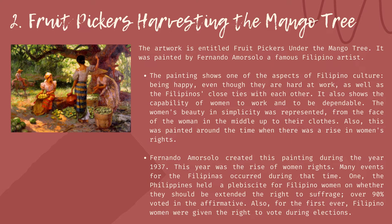Second: Fruit Pickers Harvesting the Mango Tree. The artwork is entitled Fruit Pickers Under the Mango Tree, painted by Fernando Amorsolo. The painting shows one of the aspects of Filipino culture — being happy even though they are hard at work — as well as the Filipinos' close ties with each other. It also shows the capability of women to work and to be dependable. The women's beauty in simplicity was represented, from the faces up to their clothes. This was painted during 1937, the year of the rise of women's rights. The Philippines held a public vote for Filipino women on whether they should be extended the right to suffrage — over 90% voted in the affirmative — and for the first time, Filipino women were given the right to vote during elections.